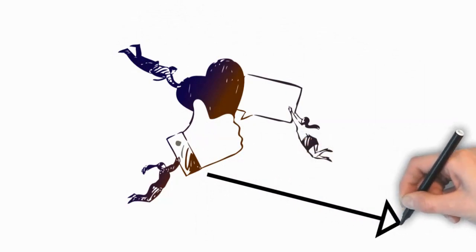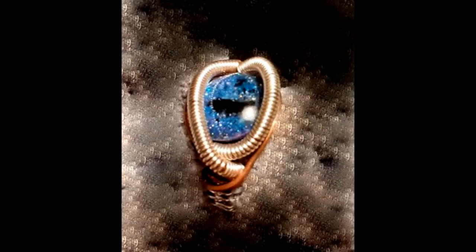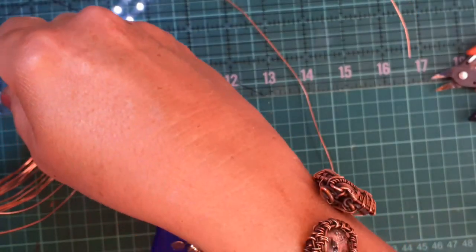Today we're going to be covering the dragon eye ring. I've used copper for the base as it is easy to bend and highlighted with the silver.